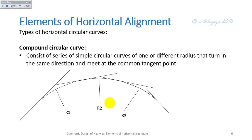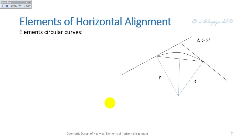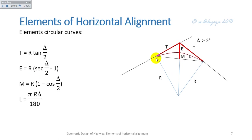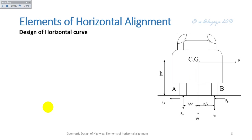Now, elements of the circular curve. Tangent length T is the length from the point of intersection to tangent T1 or T2, given by T = R·tan(Δ/2). The apex distance E is the distance from the point of intersection to the mid of curve, given by E = R(sec(Δ/2) − 1). The mid-ordinate M is the distance from the mid of curve to the chord, given by M = R(1 − cos(Δ/2)). The length of curve L is given by L = πRΔ/180.